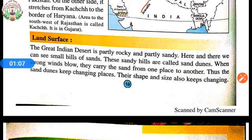The Great Indian Desert is partly rocky and partly sandy. Here and there we can see small hills of sand called sand dunes. When strong winds blow, they carry the sand from one place to another, so the sand dunes keep changing places. Their shapes and size also keep changing. The desert comprises a very dry part — the Marusthal region in the west and a semi-desert region in the east with fewer sand dunes.